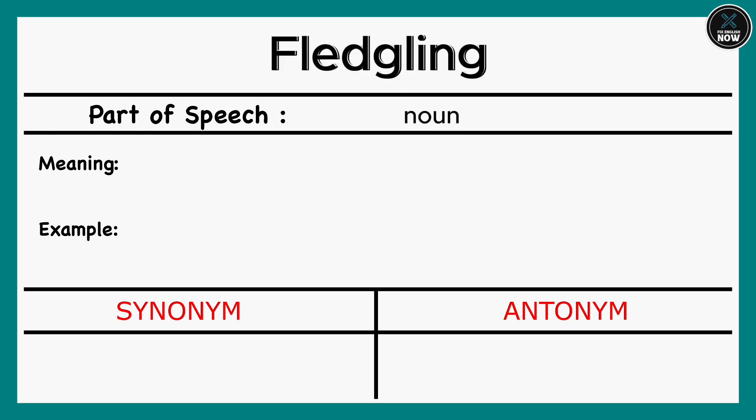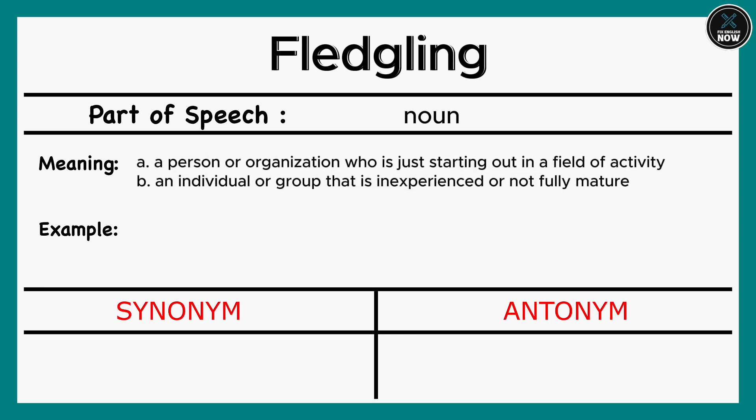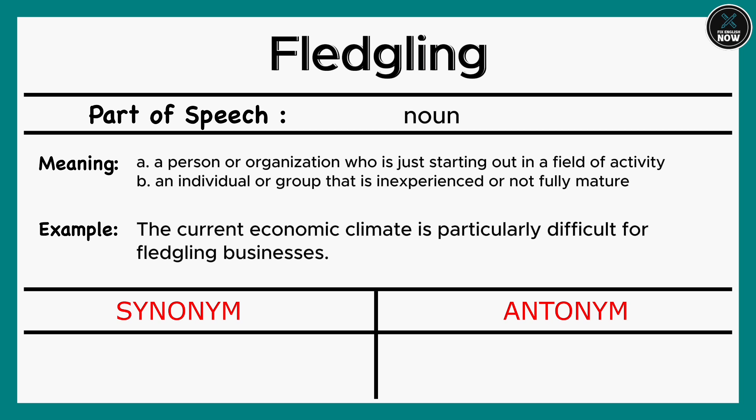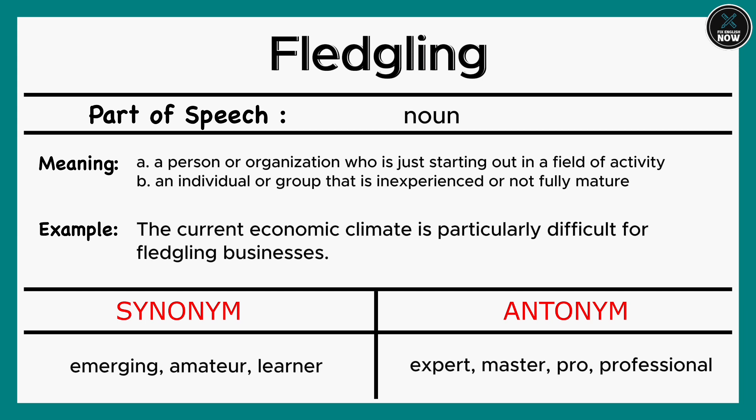Fledgling: New and inexperienced. Example: The current economic climate is particularly difficult for fledgling businesses. Synonyms: Emerging, Amateur, Learner. Antonyms: Expert, Master, Pro, Professional.